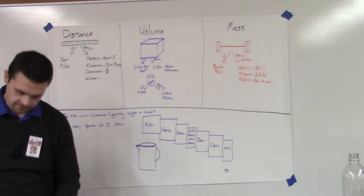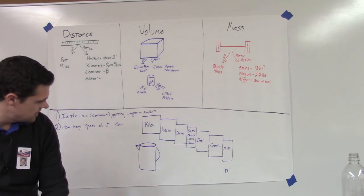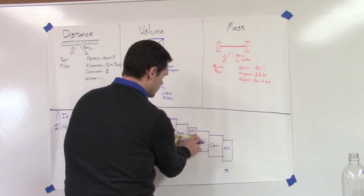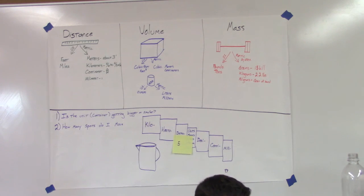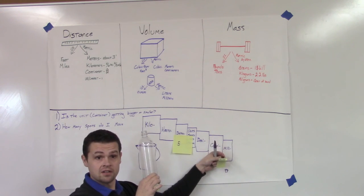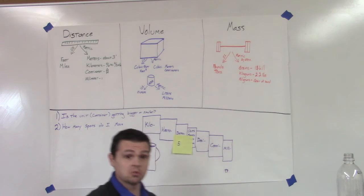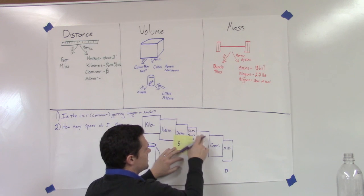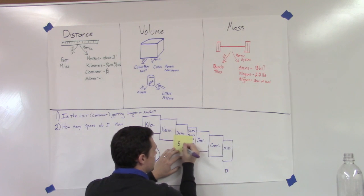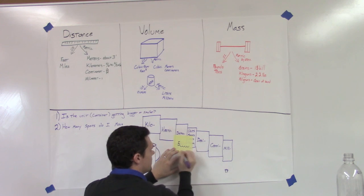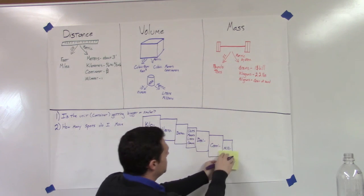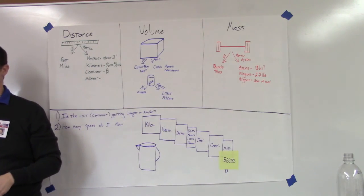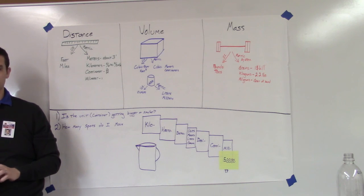Let's try another: 5 decimeters converted to millimeters. Are the containers getting bigger or smaller? Smaller. So we'll need more of them. How many spots? One, two, three, four — four spots to the right. So 5 decimeters equals 50,000 millimeters. Any questions? Alright, thank you very much.